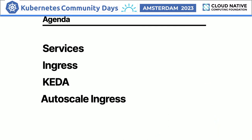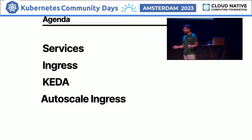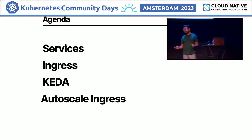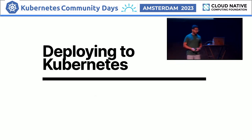Here's what we're going to do: a brief look at services, a quick look at ingresses — I'm sure you're already aware of what those are — and then we'll look at KEDA and how do we autoscale it. I'm going to show you how to autoscale the ingress, and whatever I show you, even though we're going to be scaling the ingress, you can also apply to any other workloads that you have.